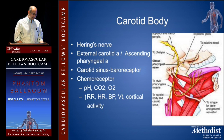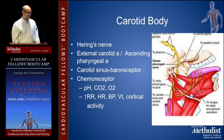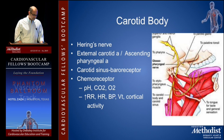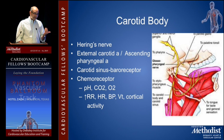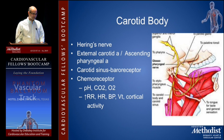The carotid sinus is a baroreceptor; the carotid body is a chemoreceptor. It's sensitive to changes in pH, CO2, and O2 partial pressures in the blood. It causes increases in respiratory rate, heart rate, blood pressure, tidal volume, and then cortical activity through the glossopharyngeal nerve.